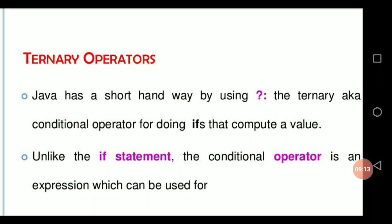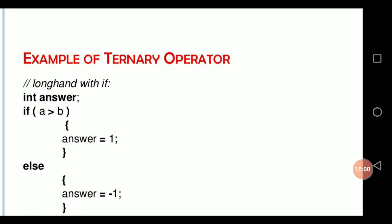The next operator is called ternary operator. Ternary operators are also called conditional operators. This type of operator uses three different expressions. The first expression should be a relational or logical expression — if it produces true, expression 2 is the result; otherwise, expression 3 is the result. The ternary operator uses the special symbols question mark (?) and colon (:).